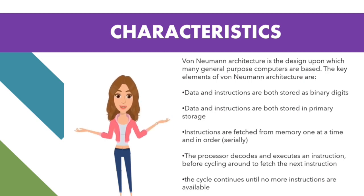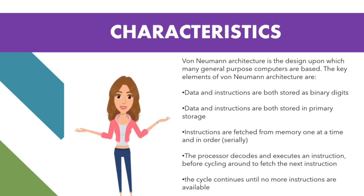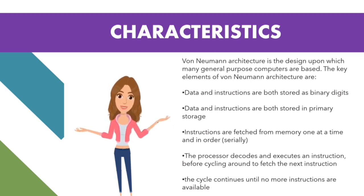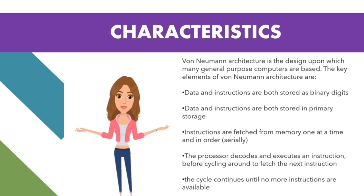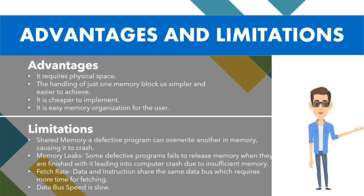Buses are the means by which information is shared between registers in a multi-register configuration system. A bus structure consists of a set of common lines, one for each bit of a register, through which binary numbers are transferred one at a time. Von Neumann architecture comprises three major bus systems: the address bus, which carries the address of data between processor and memory; the data bus, which carries data between processor, memory unit, and input/output devices; and the control bus, which carries signals or commands from the central processing unit.